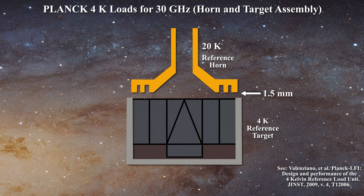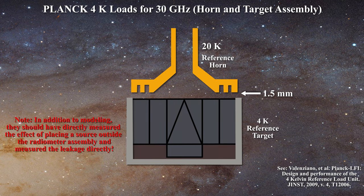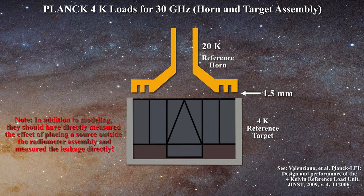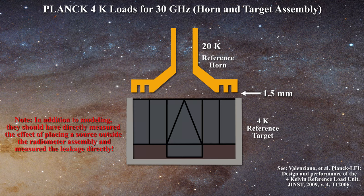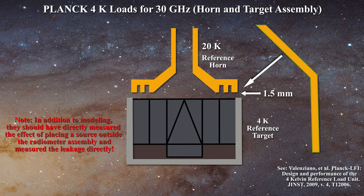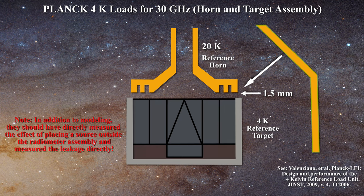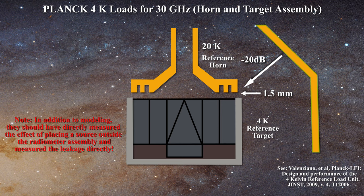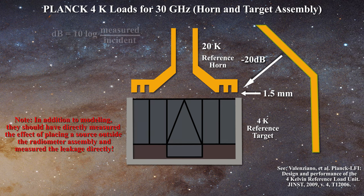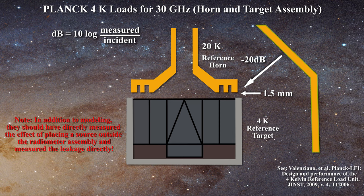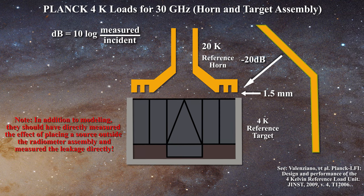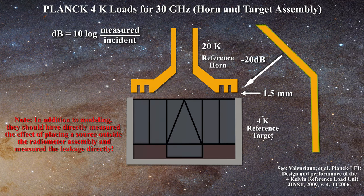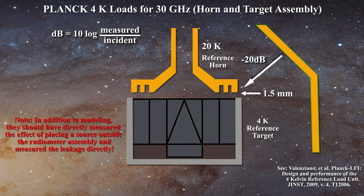The Planck team was aware of this problem and they modeled the possible spillover with finite element methods. They are concerned with signal from two sources. First, they must ensure that no signal from the 20K environment surrounding the reference loads can enter the gap. They contend that a rejection on the order of minus 20 dB exists for such signal. Since we are dealing with power, here is the equation we need to consider. In this case, the power difference in dB is equal to 10 times the log of the measured power over the initial power. As a result, they expect a rejection of roughly a factor of 100.